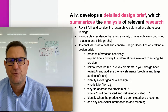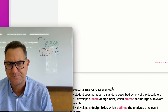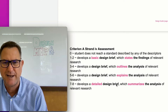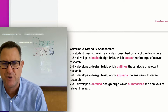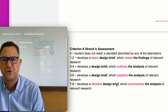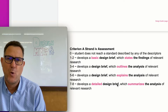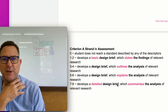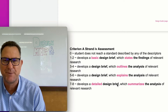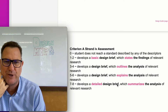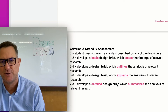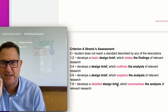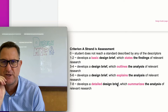To conclude, looking at the assessment criteria in greater detail: for top marks you need a detailed design brief which summarizes the analysis of research. You'll only get a score of one or two if you have a basic design brief. If it's a bit more complicated with more information, you can get three to six. But if it is a detailed design brief — with emphasis on detail and lots of words — you can get seven or eight.